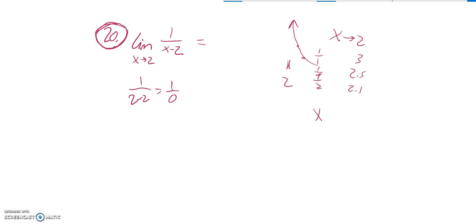And if I try to approach 2 from the negative side, like if it's 1, 1.5, or 1.9, etc. If it's 1, it's 1 over negative 1. This would be 1 over negative 1 half, which would be negative 2. So in this direction, it grows without bound.